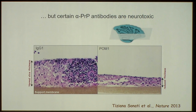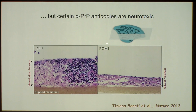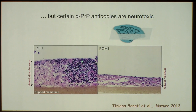This was the work of Tiziana Sonati, about 10 years ago, who showed that an antibody against the prion protein called POM1 — made by Magda Polimenido when she was a PhD student in my lab, hence 'POM' — destroys cerebellar slices. You can see in a cross-section through a cerebellar organotypic slice the granule cells and Purkinje cells. POM1 destroys all of this.